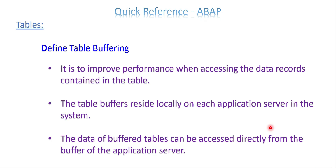Table buffering improves performance when accessing data records from a table because buffering happens at the application level. When data is available at the application level, the control does not need to go to the database table to fetch the record. The table buffer resides locally on each application server in the system. If you have multiple application servers, the buffer is saved on each one. Data of buffered tables can be accessed directly from the buffer of the application server, saving time and improving performance.